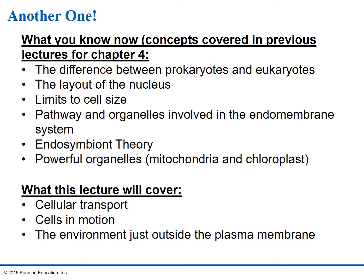Via lecture, we looked at the difference between a prokaryote and a eukaryote, studied the layout of the nucleus and talked about its importance. There was a discussion about surface area to volume ratio for cell sizing, which explains why cells being small with a larger surface area is better. We then discussed the pathway through a cell and looked at the organelles involved in the endomembrane system, and talked about the endosymbiont theory. The very last thing was powerful organelles — the mitochondria and the chloroplasts. Peroxisomes were included because of their ability to act as an oxidizing agent.